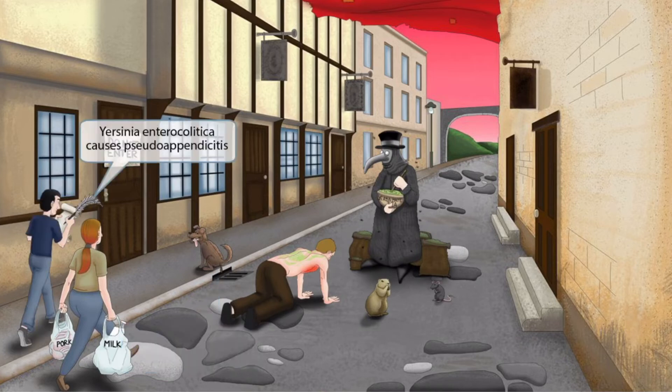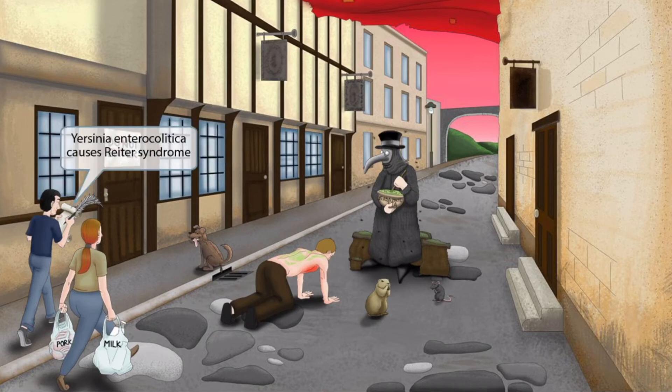We've also shown a guy writing on a notepad with a very large feather pen. He and the girl are likely employed by the city to count the infected people and provide supplies. Pen sounds like appendicitis, so we've shown him holding a huge feather pen to help you remember that Yersinia enterocolitica causes pseudo-appendicitis. We've also shown him writing on the notepad to help you remember that this bug causes Reiter's syndrome — writing for Reiter's syndrome.